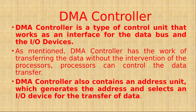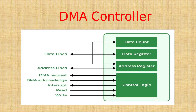The DMA controller is a type of control unit that acts as an interface for the data bus and input/output devices. It also contains an address unit which generates addresses and selects an input/output device for data transfer. In the DMA controller diagram, it consists of read and write operations, interrupt detection, DMA acknowledge, DMA request, address lines, and data lines. The data line transfers data between the peripheral device and memory, while the address line generates addresses to detect device addresses.